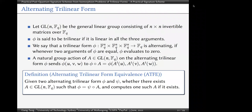We now introduce a new concept: alternating trilinear forms. Let GL(n, F_q) be the general linear group of n × n invertible matrices over F_q. A phase (form) is trilinear if it is linear in all three arguments. We say a trilinear form phi: F_q^n × F_q^n × F_q^n → F_q is alternating if whenever any two arguments of phi are equal, phi evaluates to zero. The natural group action of A in GL(n, F_q) on an alternating trilinear form phi sends it to phi composed with A^T acting on each argument.